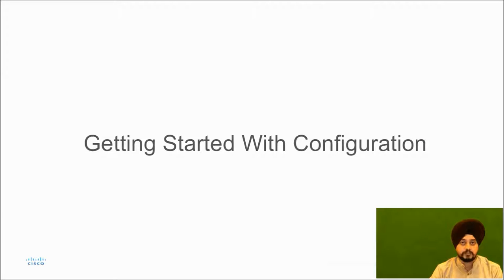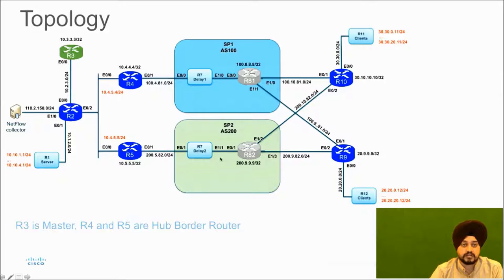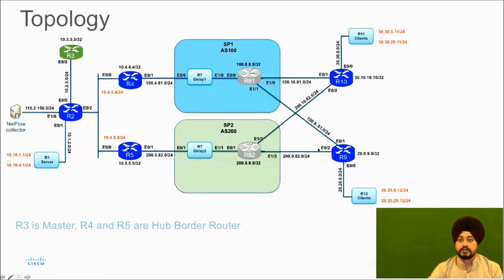Now let's get started with the configuration. The configuration will be based on this topology. The main devices we will focus on are R3, which is the hub site master controller, and R4 and R5, which are the border routers of the hub site. For the spoke site, we will focus on R9 only for simplicity.